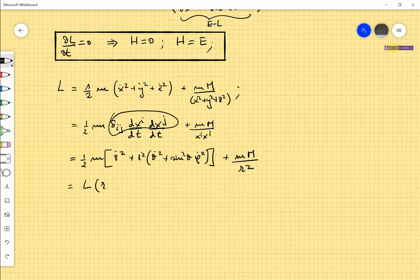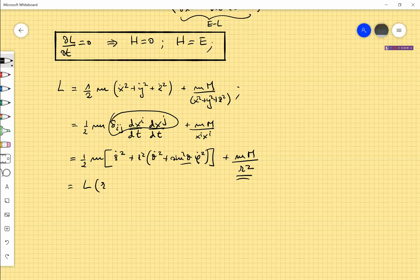This Lagrangian depends on r, first of all it depends here, it depends on theta. That does not depend on phi, it depends on r dot, it depends on theta dot, and phi dot. So you have one cyclic coordinate which is phi and then you get the conservation law for this quantity which is the angular momentum.